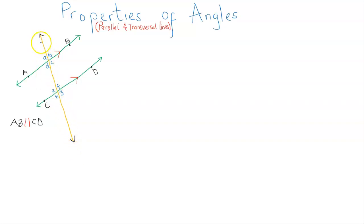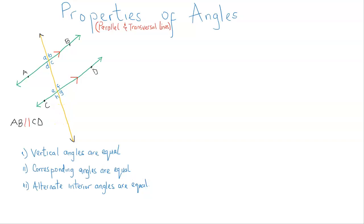So this transversal and the parallel lines have produced eight angles. Now we've got a number of implications when a transversal runs across two or more parallel lines. The first implication: vertical angles are equal. The second: corresponding angles are equal. The third implication is that alternate interior angles are equal to each other.